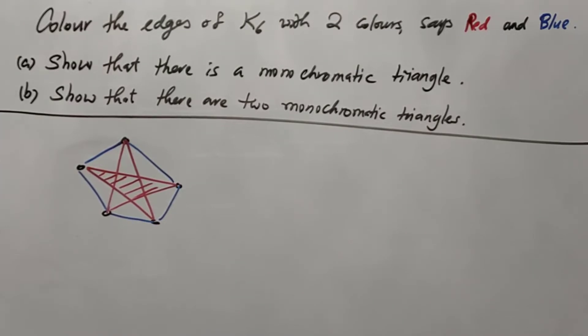But if it's six vertices, we can show that there is at least one monochromatic triangle. The proof is as follows.